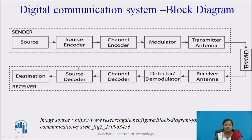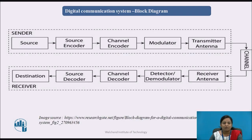This is the block diagram of a digital communication system. There are basically two main sections: the transmitter and the receiver. In the transmitter, the blocks are: information source, source encoder, channel encoder, modulator, and transmitting antenna. At the receiver side: receiving antenna, detector, channel decoder, source decoder, and destination. In between the transmitter and receiver, a communication channel is present. Let us see the working of each block one by one.